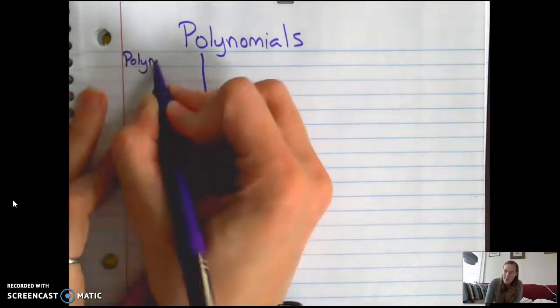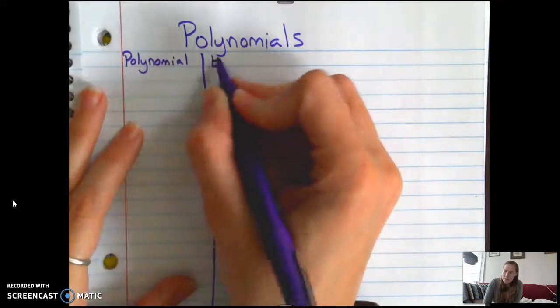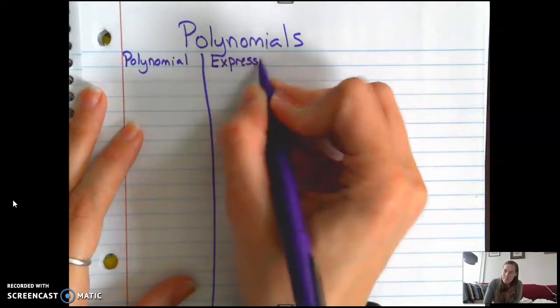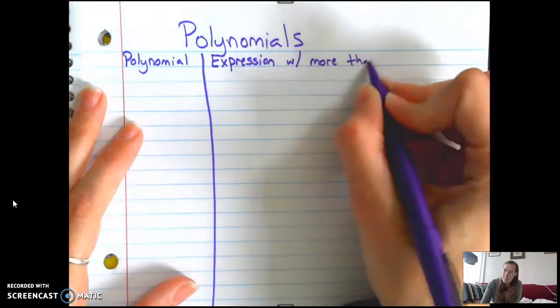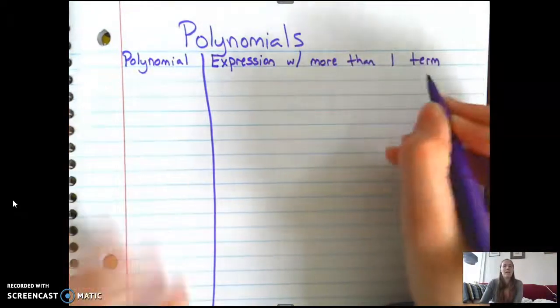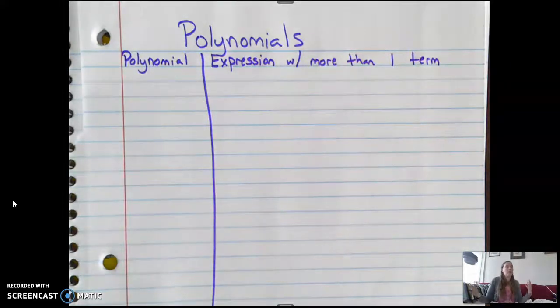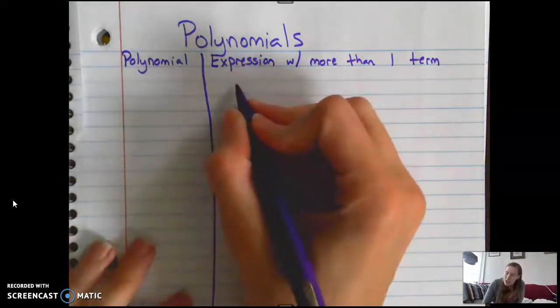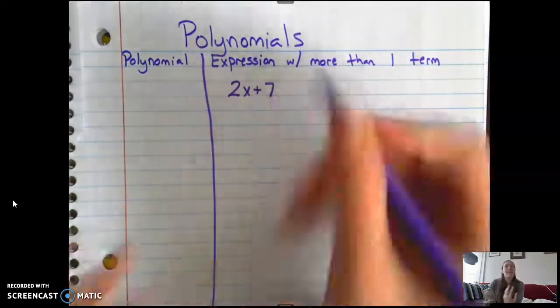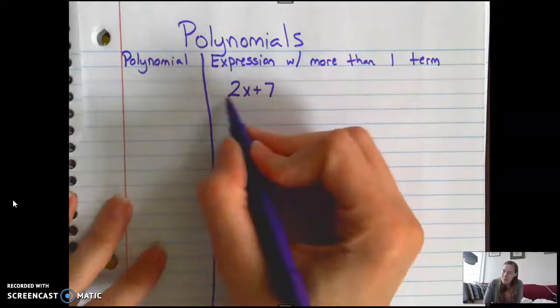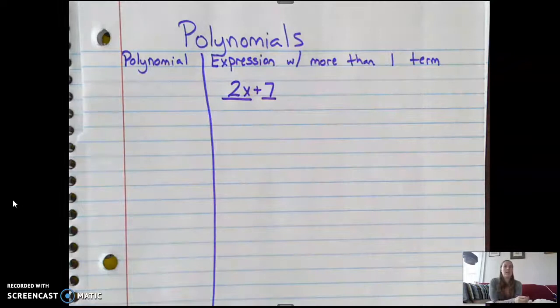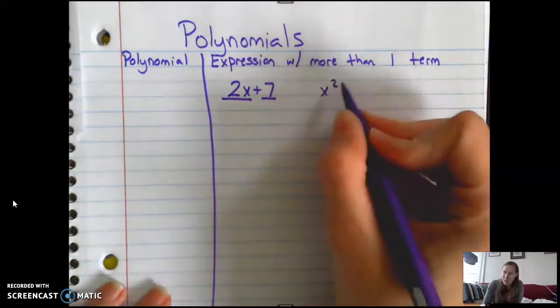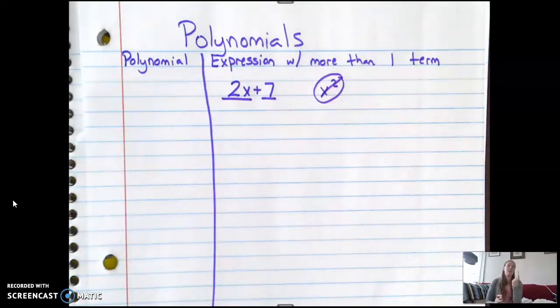So, a polynomial is an expression with more than one term. And what I mean by that is poly means multiple. So if we think about a line like 2x plus 7, this is a polynomial because it has two different terms. So it has to have multiple terms. It can have 7 terms, it can have 20 terms, it just has to have more than one. So something like x squared, that is not a polynomial because it only has one term.